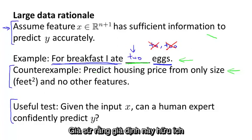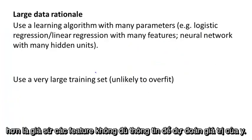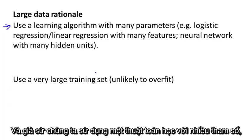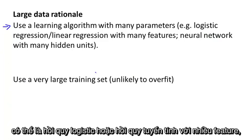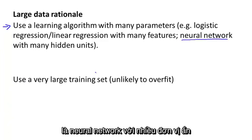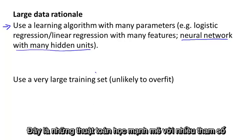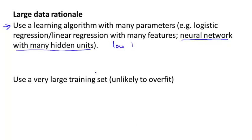So let's say this assumption holds. Let's see then when having a lot of data could help. Suppose the features have enough information to predict the value of y. And let's suppose we use a learning algorithm with a large number of parameters. So maybe logistic regression or linear regression with a large number of features. Or one thing that I sometimes do, one thing that I often do actually, is use a neural network with many hidden units.